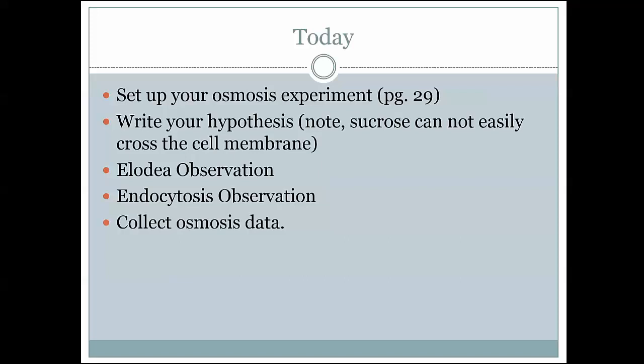We are then going to do an observation using Elodea which is an aquatic plant. We will place it in a hypertonic environment and a hypotonic environment and observe its cells under the microscope. And then hopefully we'll also do an endocytosis experiment using a small organism that you will feed with ink or at least bacteria that have been stained with ink. As it takes in that food you'll be able to see food vacuoles forming inside of that organism. So the process of phagocytosis may be observable in lab this week.